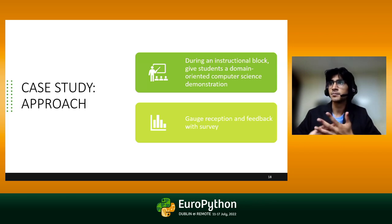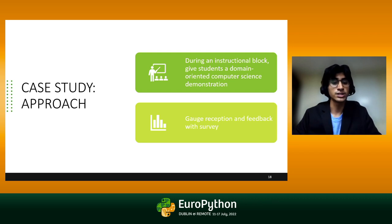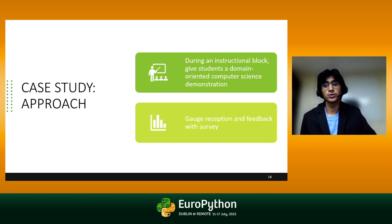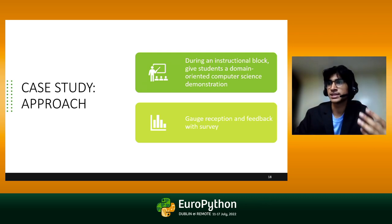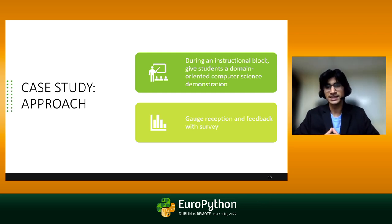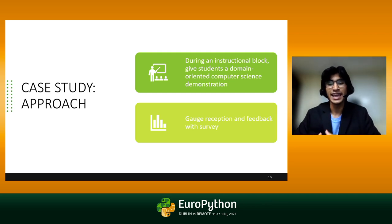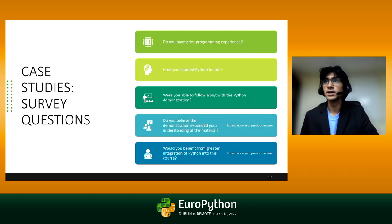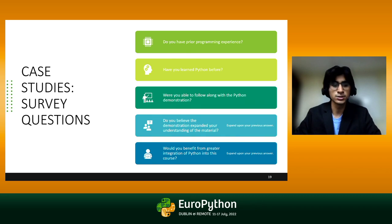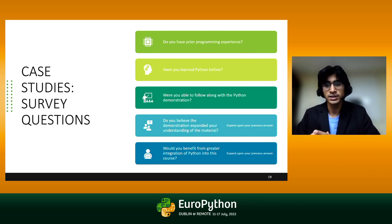Here's our approach: during an instructional block, we give students a domain-oriented computer science demonstration. For example, in a biology class, we give a talk on DNA sequencing and discuss how we can accomplish that through Python. Most importantly, we gauge reception and feedback with a survey. These studies were conducted on a very small scale and likely embed a high degree of bias, so no statistically significant conclusions should be drawn. Instead, we hope to motivate future studies and greater discourse on this issue.